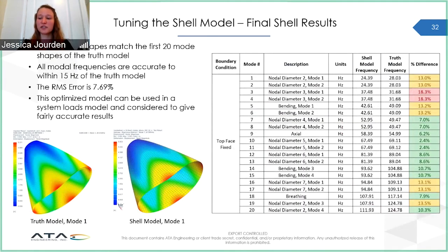Although there is still an RMS error of over 7%, this is not bad since all finite element analyses are just approximations of reality. However, more accuracy could be achieved by breaking the model into more than 10 segments for the calculation of equivalent shell properties. The final shell model's mode shapes all match the truth model. The greatest percent difference in frequency is 18% for modes 3 and 4, but that is only a difference of 6 Hz. The modal frequencies of the shell model are all within 15 Hz of the truth model frequency for the same mode shape. This shell model can be used in a system loads model, and its results can be considered fairly accurate.